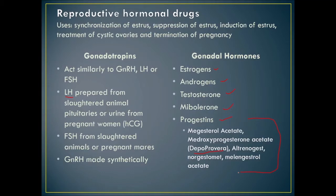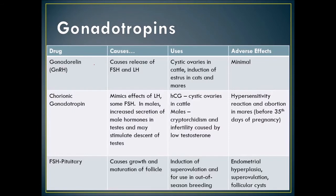Gonadorelin causes release of FSH and LH and can be used for cystic ovaries in cattle, induction of estrus in cats and mares, with minimal side effects. Chorionic gonadotropin mimics the effect of LH and some FSH. In males it increases secretion of male hormones and can stimulate testicular descent. HCG is used for cystic ovaries in cattle, cryptorchidism in males, and infertility caused by low testosterone.